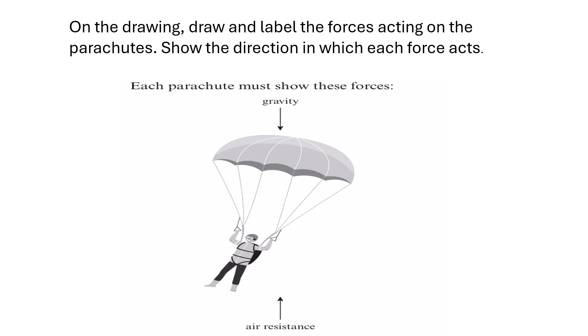On the drawing, draw and label the forces acting on the parachutes. Show the direction in which each force acts. Each parachute must show these forces: gravity and air resistance.